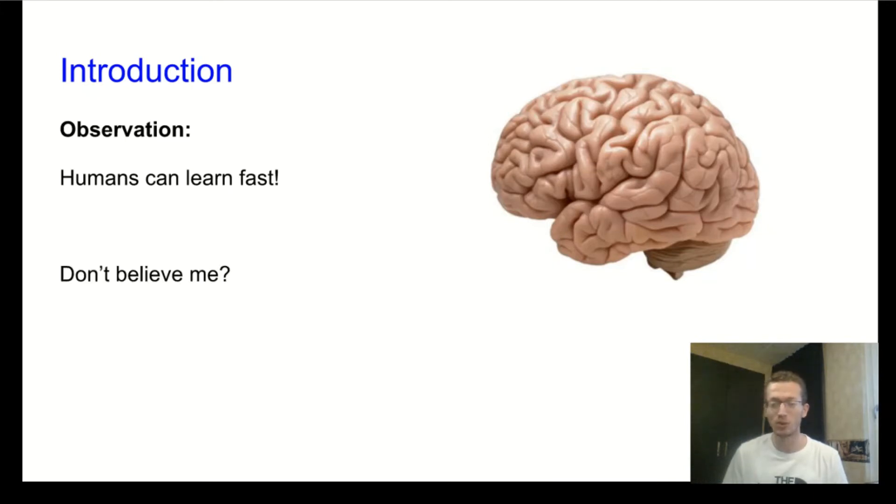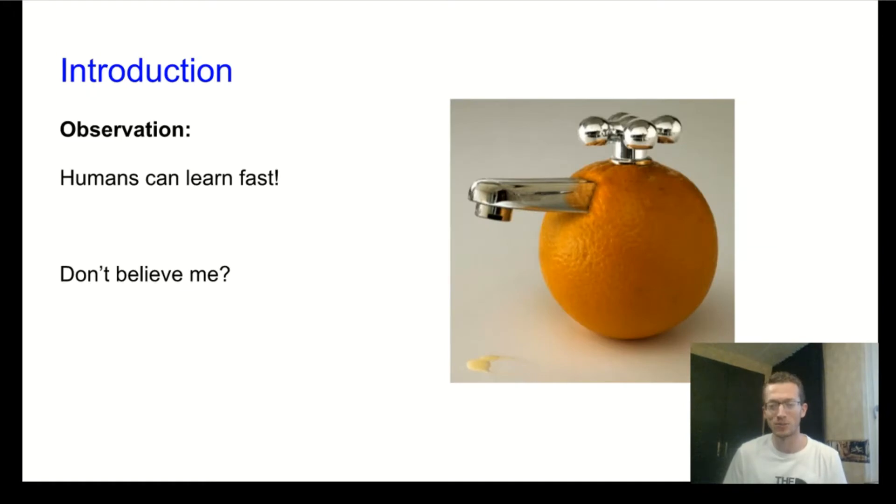Suppose there is an object that you have never seen before in your life. Suppose it is this weird thing. Now let me tell you that I call this thing an O-ring. And I dare to say that you have now learned the concept of an O-ring just from this simple example.